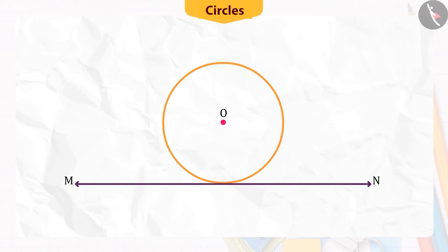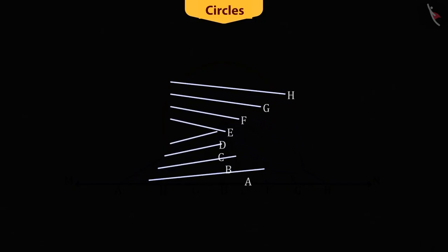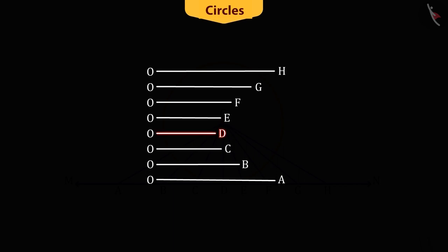Now, if from the centre O of the circle, some lines to the tangent are drawn, which are OA, OB, OC, OD, OE, OF, OG and OH. On measuring these, we find that the line OD is the radius of the circle. Its length is the shortest of all.